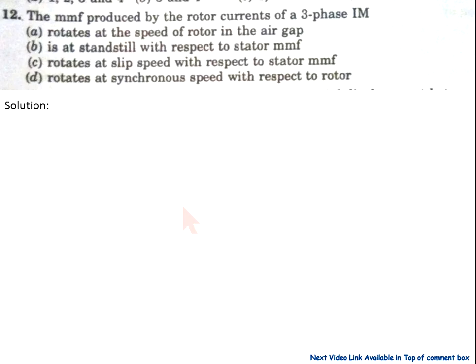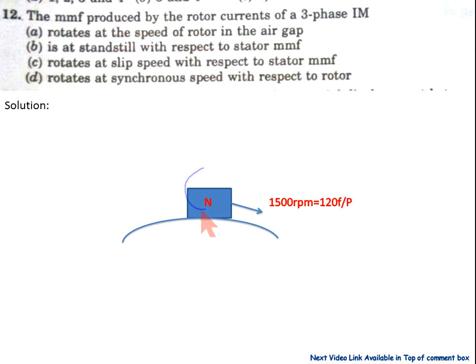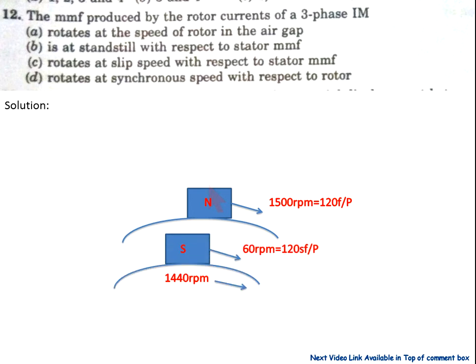Now, question number 12: The MMF produced by the rotor current of the three-phase induction motor. The stator magnetic field rotates at 1500 RPM for a 4-pole 50 Hz induction motor, and the rotor rotates at 1440 RPM due to a slip of 60 RPM — that is, slip speed = 120·S·f / P. The rotor magnetic field rotates at 60 RPM with respect to the rotor structure, and at 0 RPM with respect to the stator magnetic field. So statement B is correct.